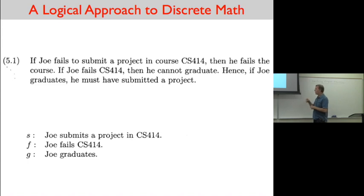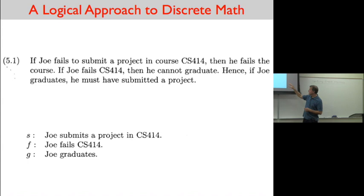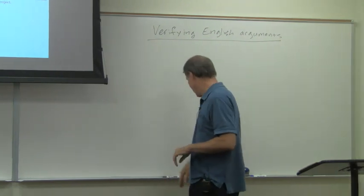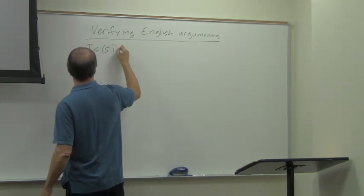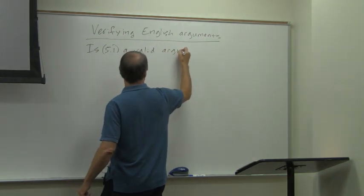As we've done before, we assign a letter - a variable - for each particular phrase in the discussion. Let S be 'Joe submits a project in CS 414.' Let F be 'Joe fails the course CS 414.' And let G be 'Joe graduates.' So now we have letters S, F, and G. Here is argument 5.1 - is it a valid argument?